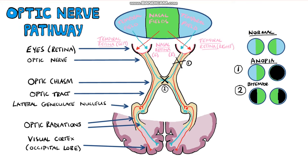Therefore, if we have a lesion here in the optic chiasm, the patient will have vision defects in their temporal visual fields. This is why it's known as bitemporal hemianopia.